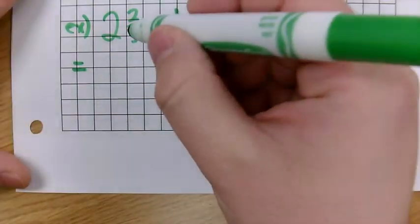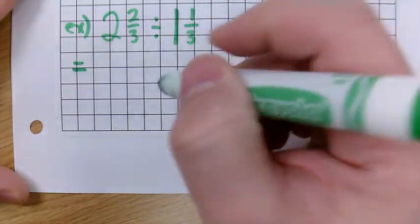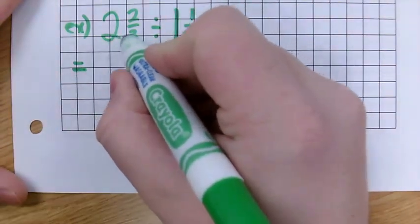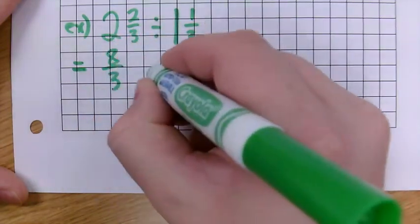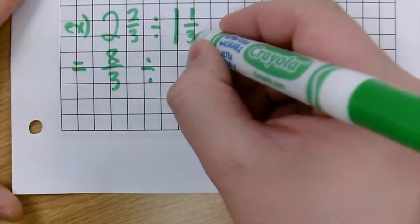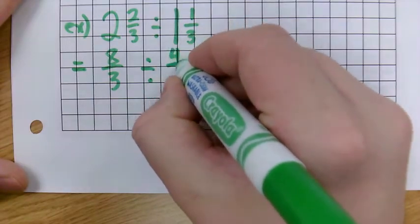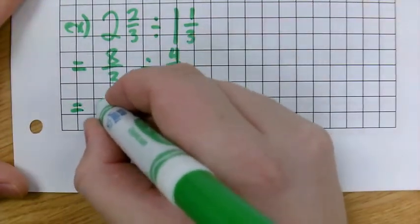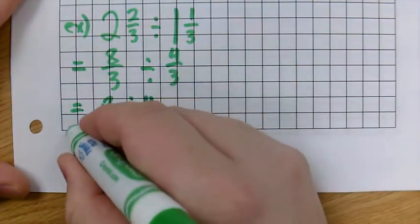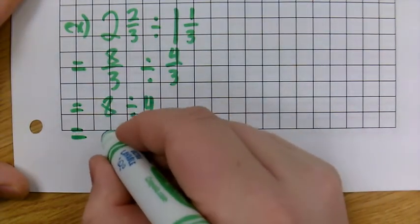Let's do a little example here. 2 and 2 thirds divided by 1 and 1 third. Well, 2 and 2 thirds, 2 times 3 is 6, plus 2 is 8 thirds, divided by 1 times 3 is 3, plus 1 is 4 thirds. We already have common denominators, so we can just go 8 divided by 4. 8 divided by 4 is 2.